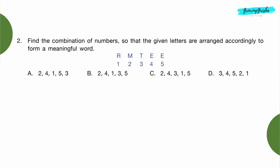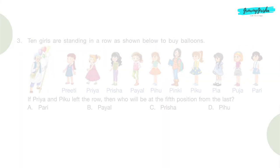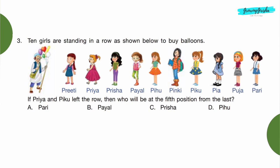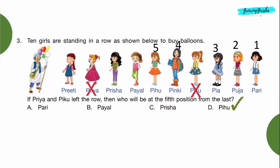Question 2: Find the combination of numbers so that the given letters are arranged accordingly to form a meaningful word. The word formed from the given letters is METER, and if we arrange the numbers it will come 24315. Option C. Question 3: Ten girls are standing in a row as shown below to buy balloons. If Priya and Piku left the row, then who will be at the fifth position from the last?